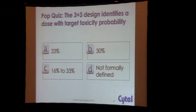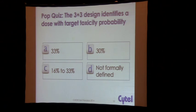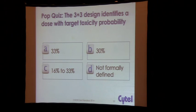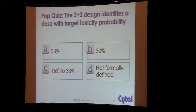In terms of the properties of this design — if you get an MTD using a 3+3 design, what do you think the rate of DLTs is that you've actually targeted? Is the MTD representing 33% toxicity? 30% toxicity? Somewhere between 16% and 33%? Or has it actually not been formally defined?